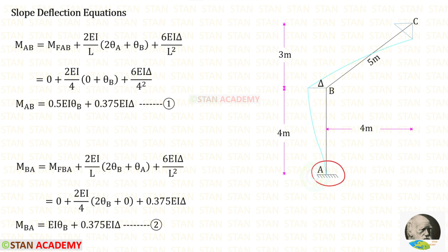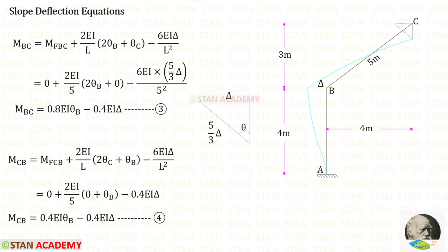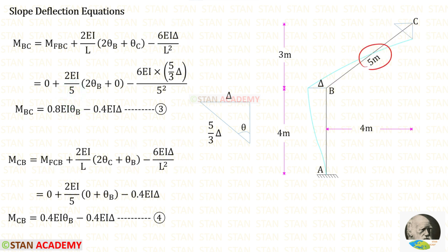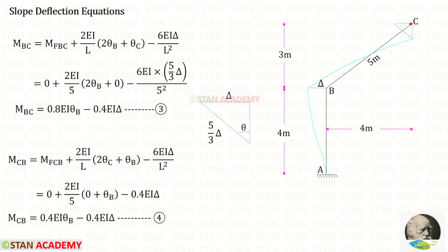All fixed end moments are zero. Since point A is a fixed support, theta_A = 0. This gives us two equations for member AB. Now, for member BC, there is also displacement, so we add sway movements to the equations. However, for member BC the displacement occurs on the right side, so the sway movements are taken as negative. The length of BC is 5 and the displacement is (5/3) × delta. Since theta_C = 0, we get two equations for member BC.